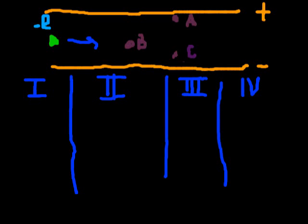This is an AP question. The question is basically about an electron, which is placed between two charged parallel plates, as shown. The question asks: which of the following statements is true? Statement one says that the electrostatic force is greater at point A than at point B.